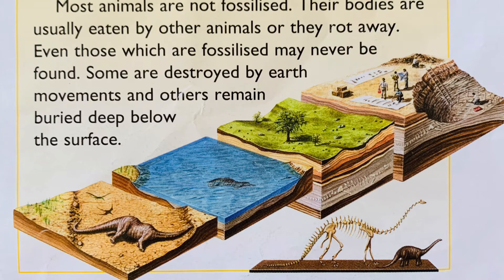Scientists learn about ancient animals from the discovery of fossilized bones and other remains. For a fossil to form after an animal dies, its body must be covered quickly in sand or mud, possibly in a flood. After millions of years, the sand turns to sandstone and the bones slowly dissolve and are replaced by minerals, fossilizing them. The minerals can be as hard and heavy as rock. Finally, if the sandstone is worn away, the fossilized bones may be exposed at the earth's surface, allowing scientists the chance to discover them.